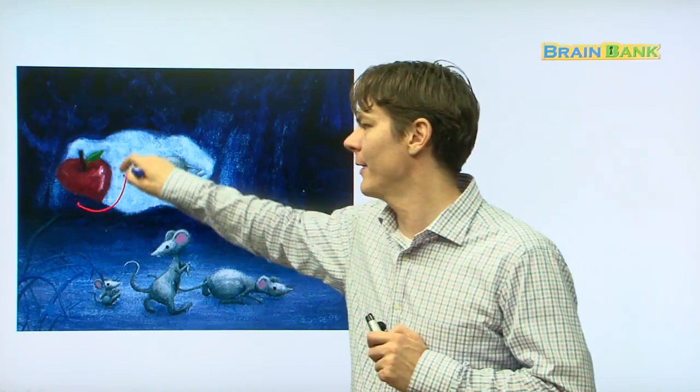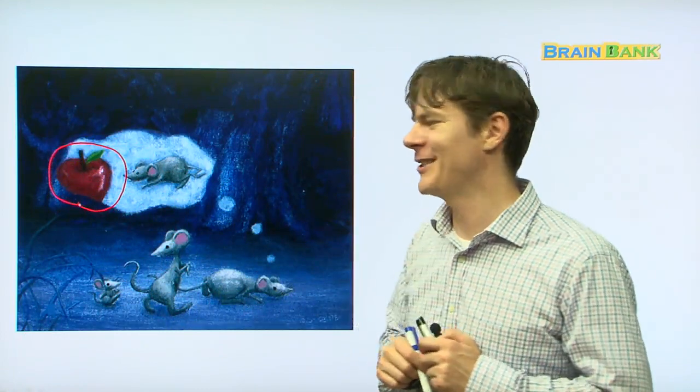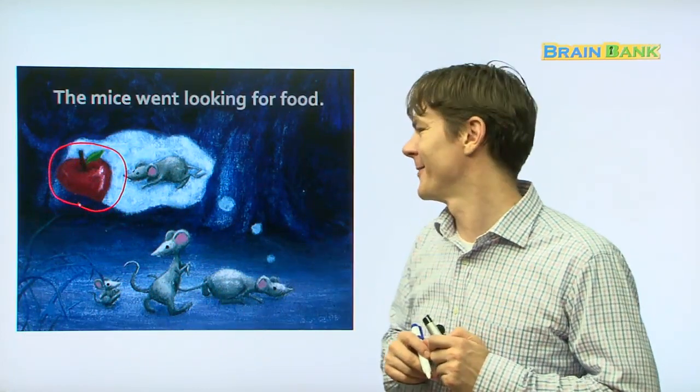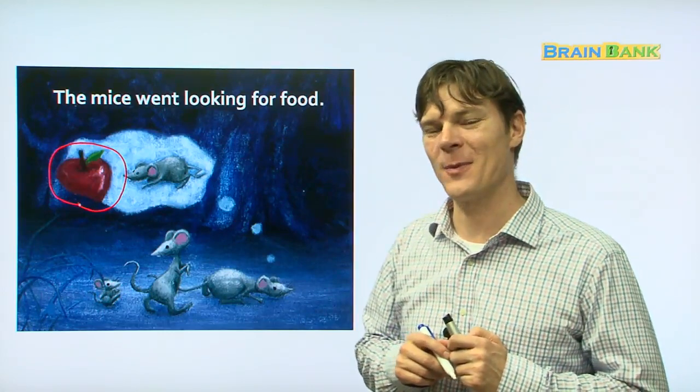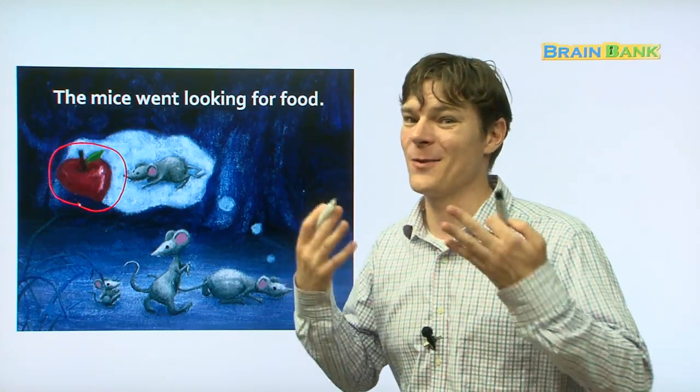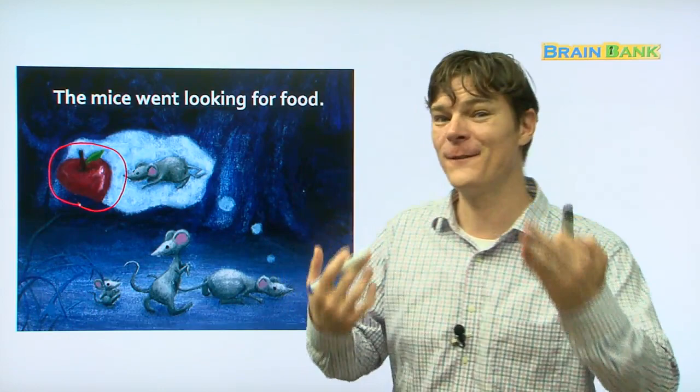There they are walking, la la la la, and they see some kind of food. What kind of food do they see right here? Here it is. What is that? An apple. An apple. Delicious red apple. The mice went looking for food. Everyone repeat after me. The mice went looking for food.